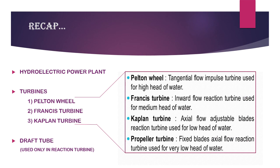Quick recap: In a hydroelectric power plant, we use turbines. The three main types are Pelton wheel, Francis, and Kaplan/propeller. Pelton wheel: tangential flow, impulse turbine, high head. Francis: radial flow (inward to outward), reaction turbine, medium head. Kaplan/propeller: axial flow, reaction turbine, adjustable or fixed blades, low head. The draft tube is used with reaction turbines to increase efficiency by creating negative pressure.